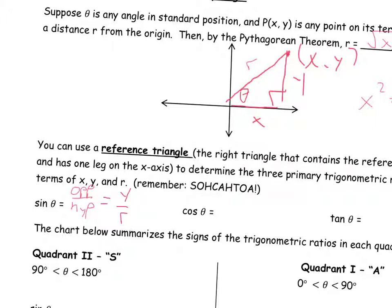Cos theta — same thing. Going back to our triangle, here's our angle. The adjacent side is right there. Cos, from SOH CAH TOA, is adjacent over hypotenuse. So cos theta would be X over R.